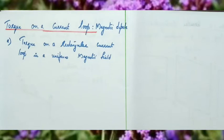Today we are going to study torque on a current loop magnetic dipole. The first derivation is torque on a rectangular current loop placed in a uniform magnetic field.